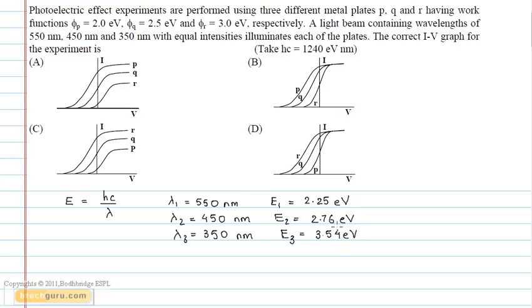In the case of plate P, all three wavelengths are capable of ejecting the electrons. In case of plate Q, only two wavelengths are capable of ejecting the electrons. And in case of R, only one wavelength can eject the electrons.